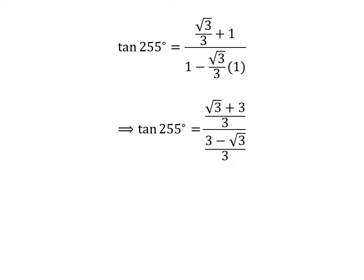Further simplification gives us: tangent of 255 degrees is equal to square root of 3 plus 3 upon 3, minus square root of 3 upon 3.